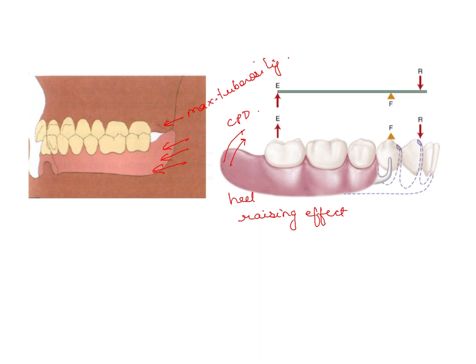Now this can be minimized by understanding the simple mechanics that this point acts as a fulcrum over here. So if E is the effort arm and R is the resistance arm, then the denture is going to tip along this axis, which is the fulcrum where you will have a direct retainer.